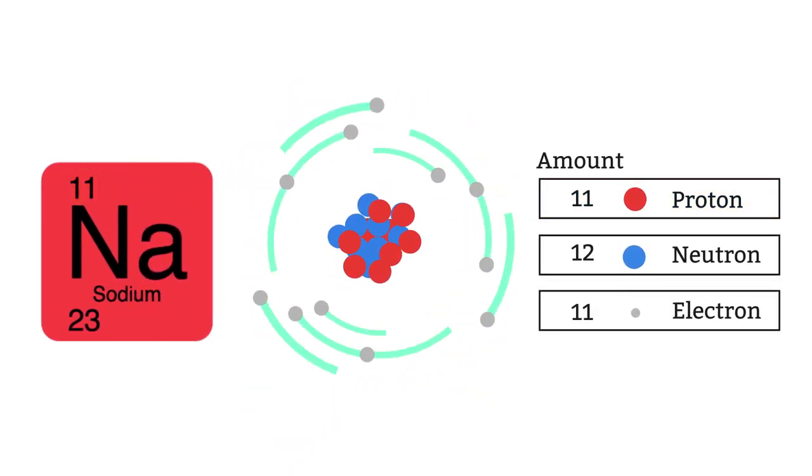Time for the answer. There are 11 protons in sodium because this is the atomic number, so there must be 11 electrons too. There are 23 minus 11 neutrons, which makes 12.